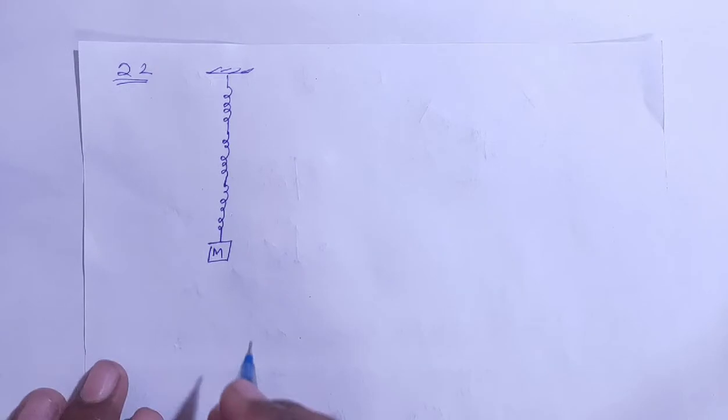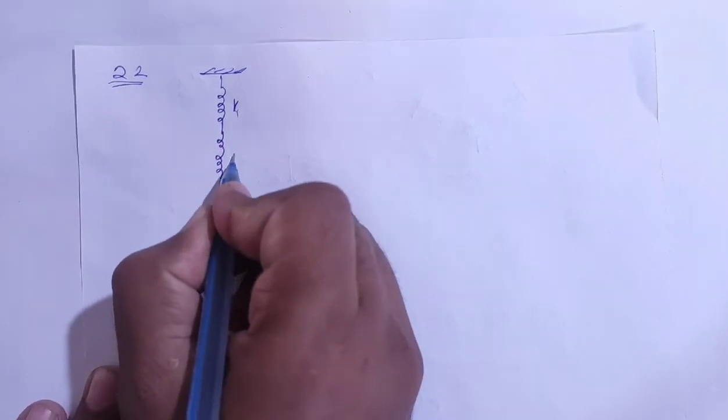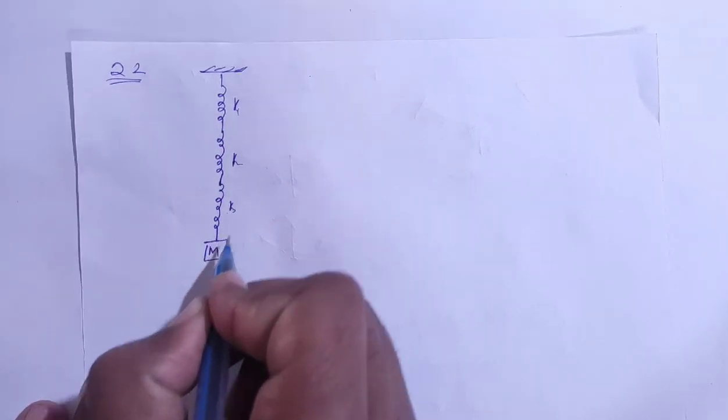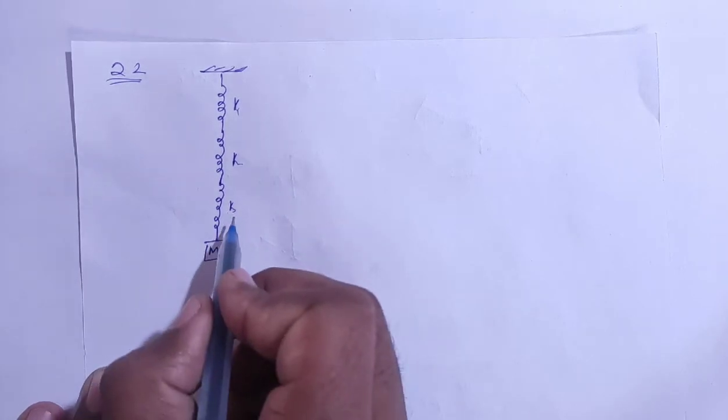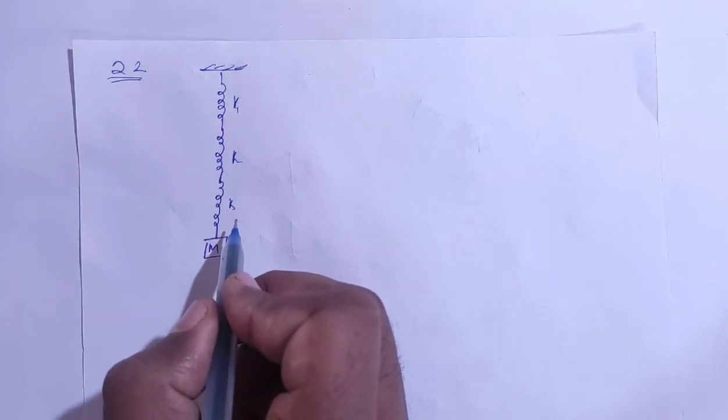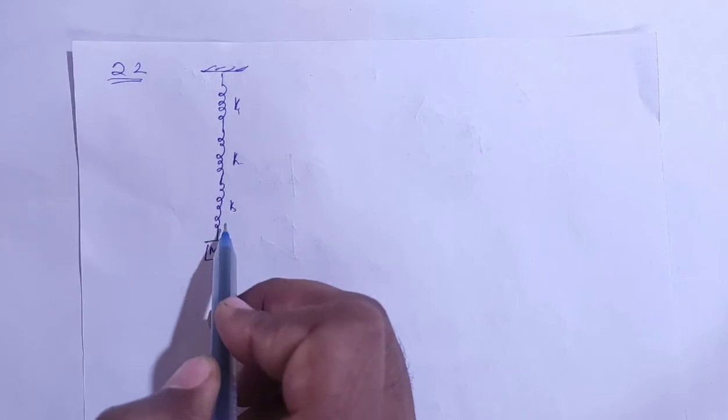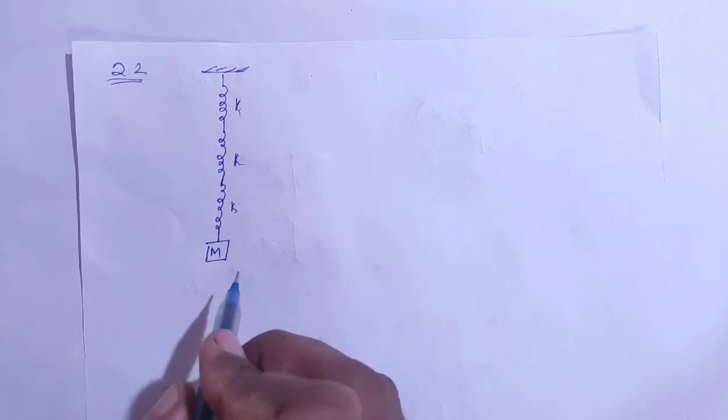Okay, at the top there are three springs k1, k2, and k3, and mass m is there. Now it says when this is in equilibrium, how much potential energy is stored in them. Equilibrium means...